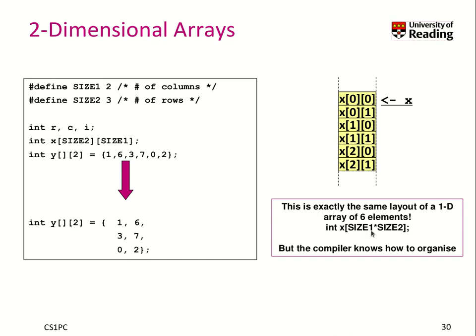So you can use size 1 times size 2, so six elements, and throw it in a 1D array. And it's really syntactic sugar for you to have multidimensional arrays because the compiler does under the hood all this kind of organization for you.